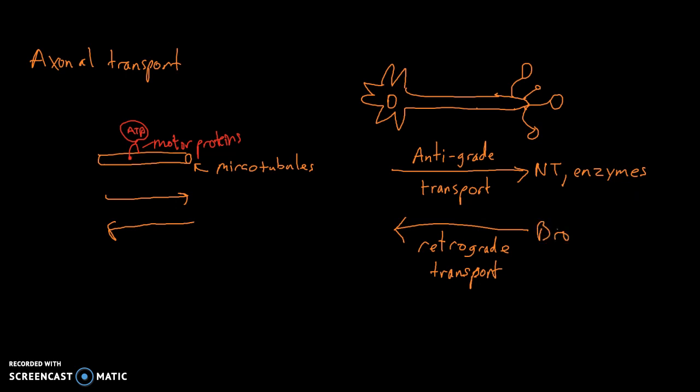Here, the best example and what retrograde transport is often used for is broken neurotransmitters, worn down mitochondria. Worn down mitochondria.